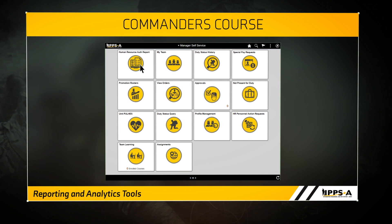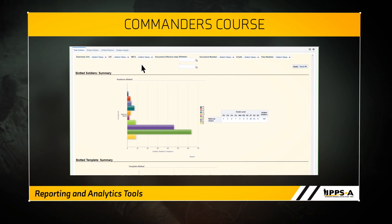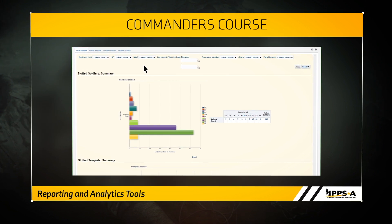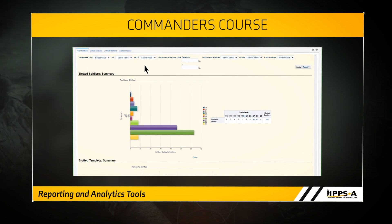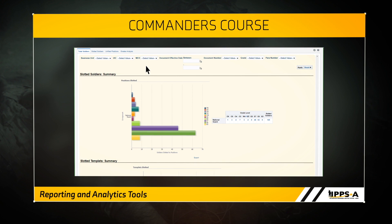The HARAR contains four tabs: Total Soldiers, Slotted Soldiers, Unfilled Positions, and Grades Analysis.